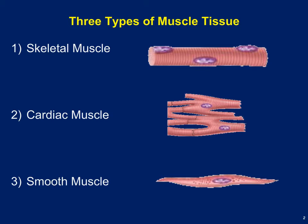Skeletal muscle is a striated muscle with little lines going through it. It is multi-nucleated, meaning it has several nuclei, and it is usually under voluntary control, meaning we have to consciously tell our skeletal muscles to contract. The other types of muscles are involuntary — cardiac and smooth muscle — run by our autonomic nervous system, or in the case of cardiac muscle, it contracts using its own rhythm.